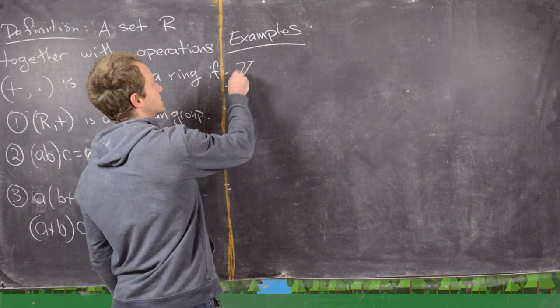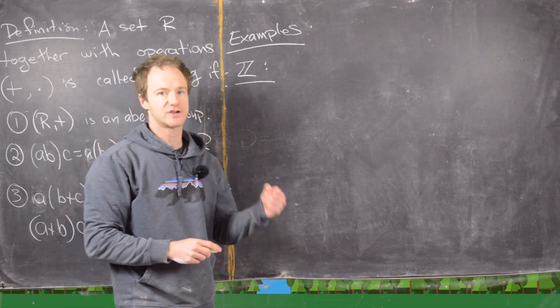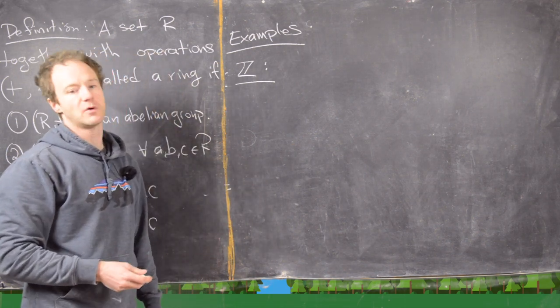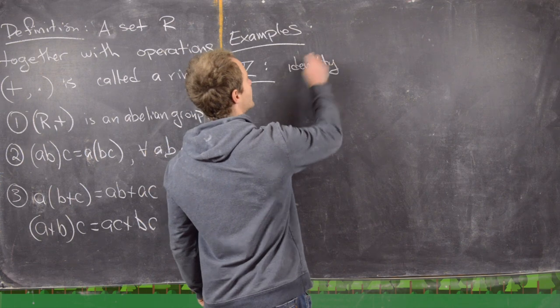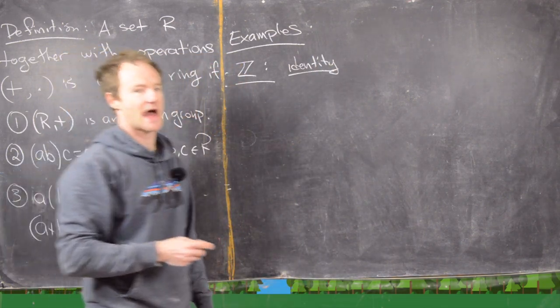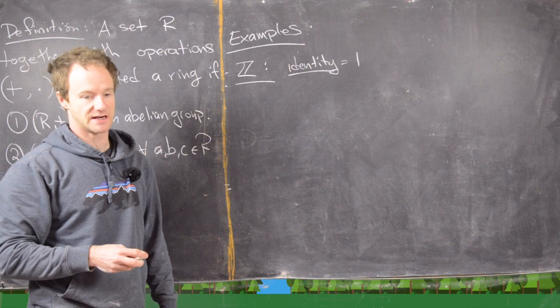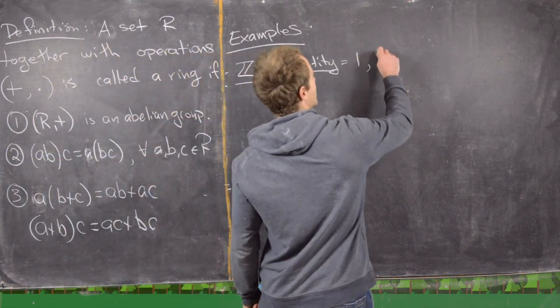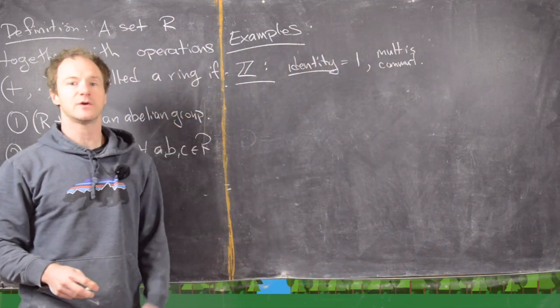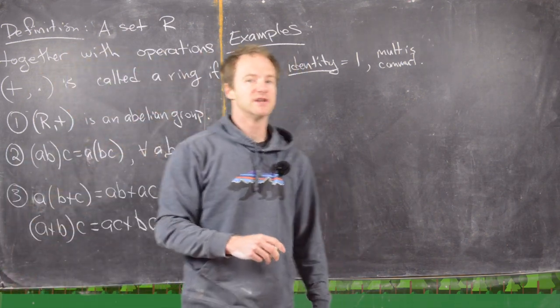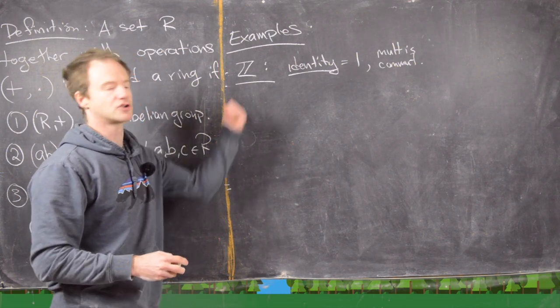So the first example that I would like to look at is the integers. The operations are normal addition and normal multiplication. So now notice here we have an identity, and whenever I say identity I mean multiplicative identity because we always have an additive identity which is 0. And the multiplicative identity here is 1. We also have the multiplication is commutative. And generally if it's commutative we call it a commutative ring. So the addition is always commutative. So whenever we're talking about the commutativity of a ring it's always with respect to the multiplication. And that's true because we just have numbers here.